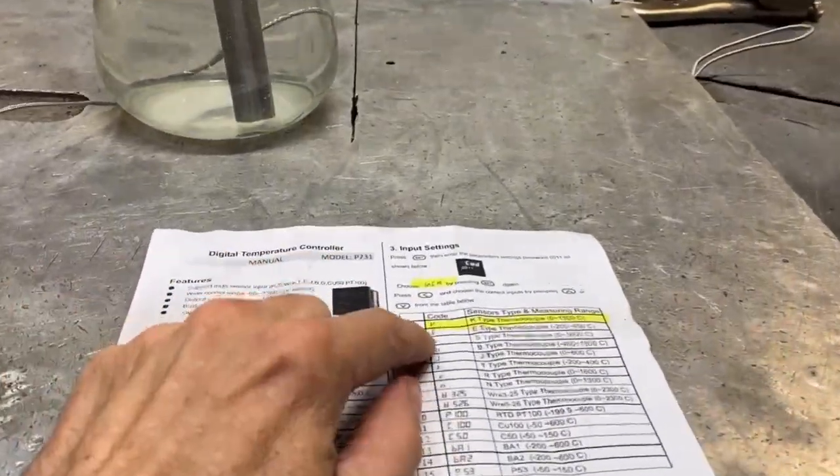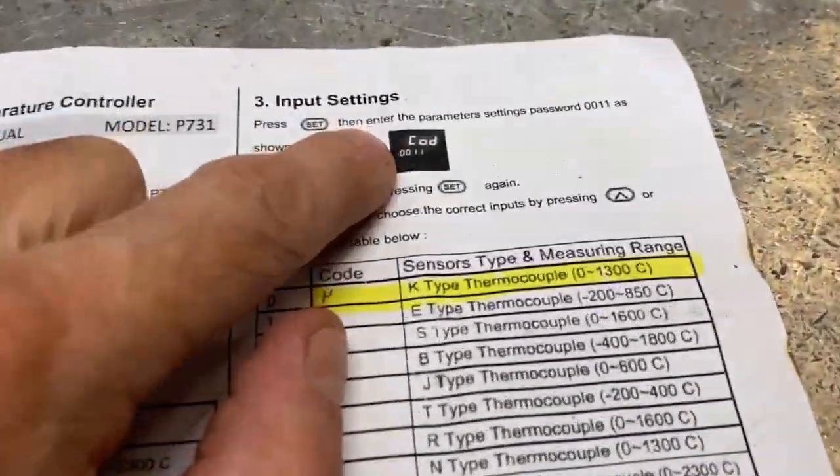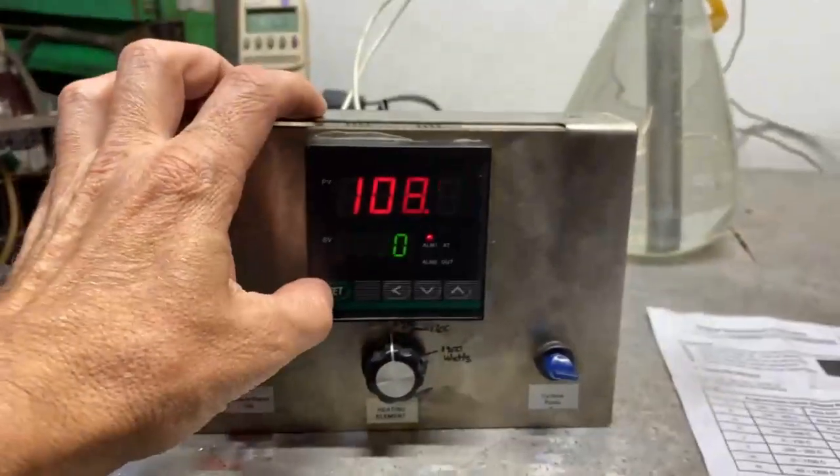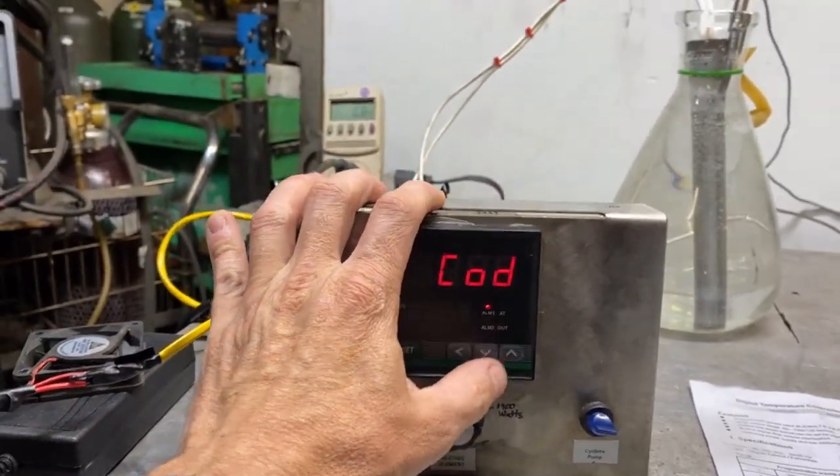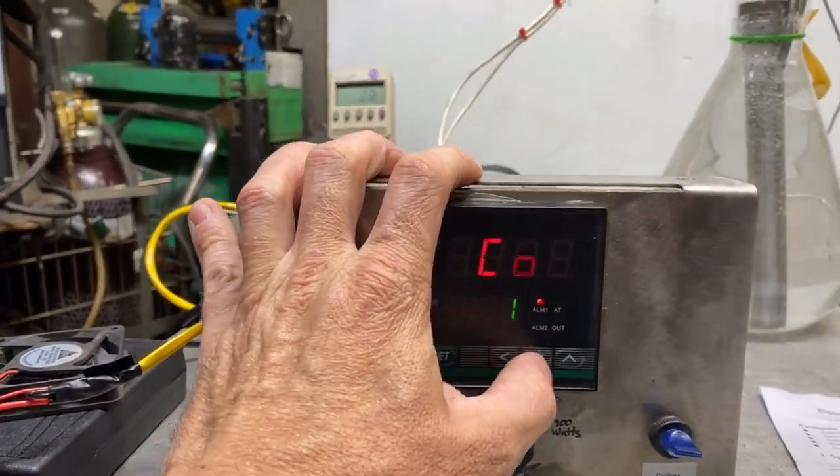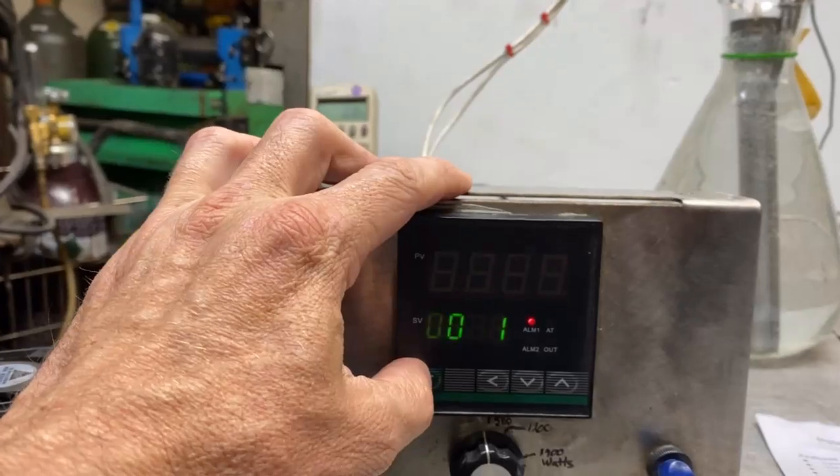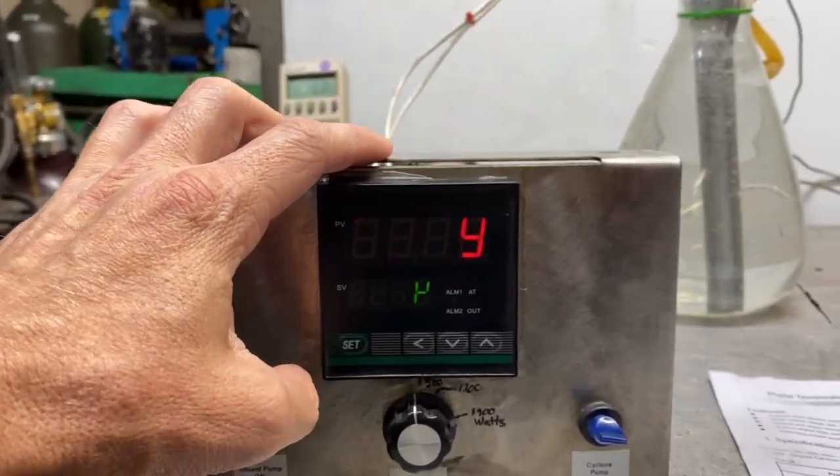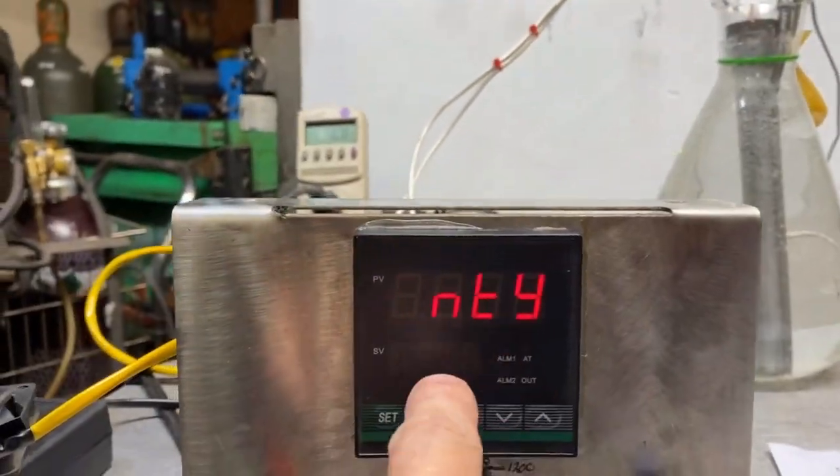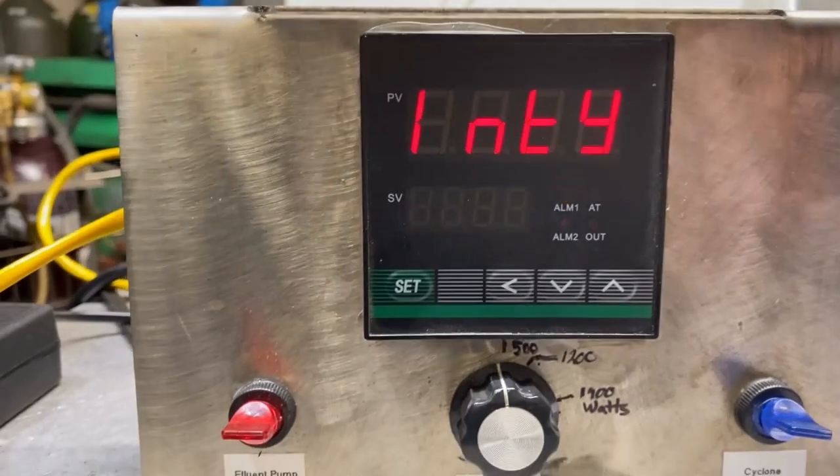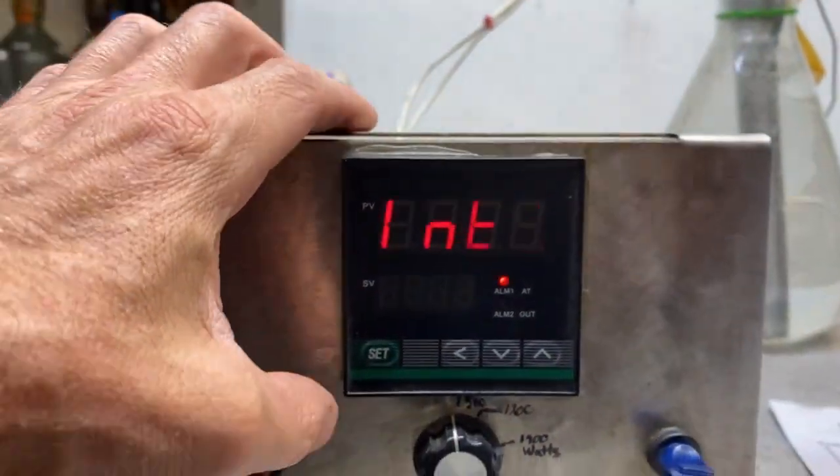And to access this callout, we go to COD 11. So we hit the set button and we press up on the arrow, the over arrow, and then up again on the arrow. And we hit set. And it brings us directly to the thermocouple settings. And you can see here that we are already set on Y. So we're good to go.